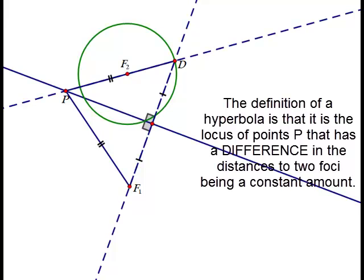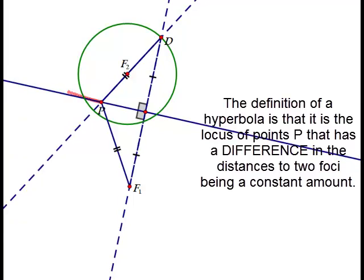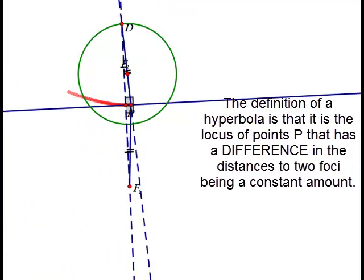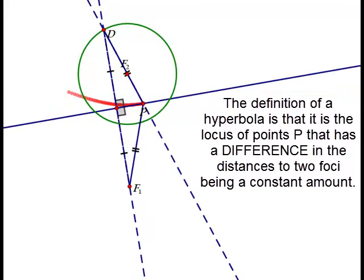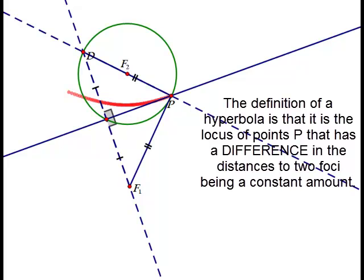Now why would we want to do this? Well, the definition of a hyperbola is that it is the locus of points P that has a difference in the distances to two foci being a constant amount. So here in our animation, we can see a sketch of this particular locus.